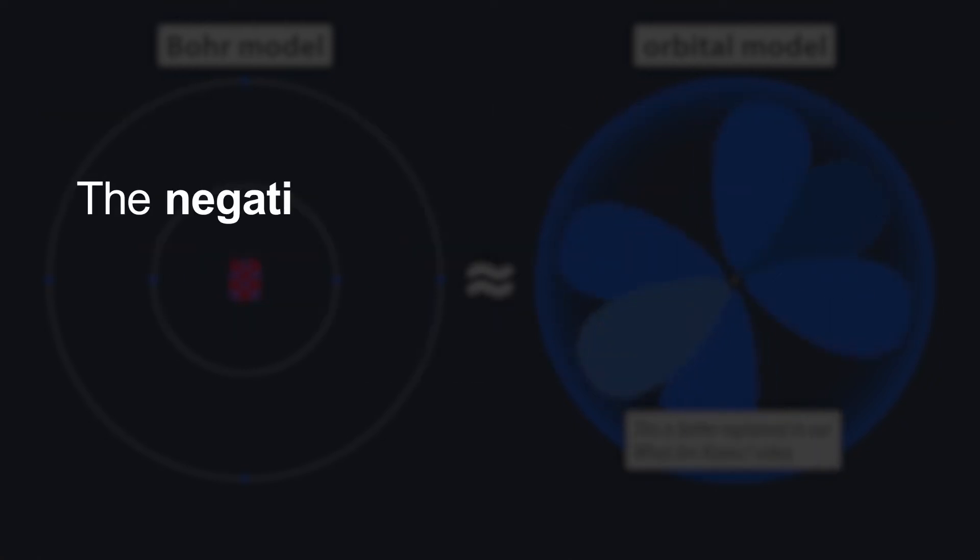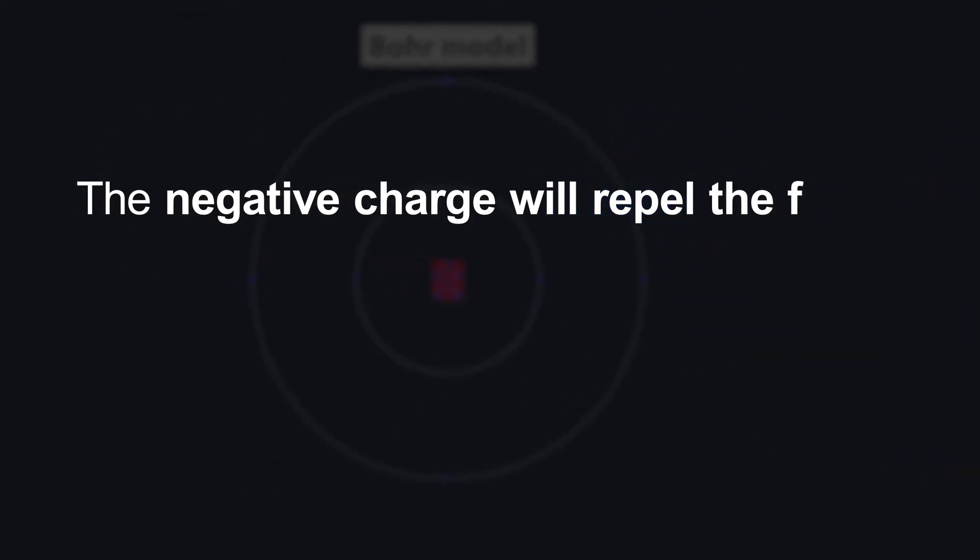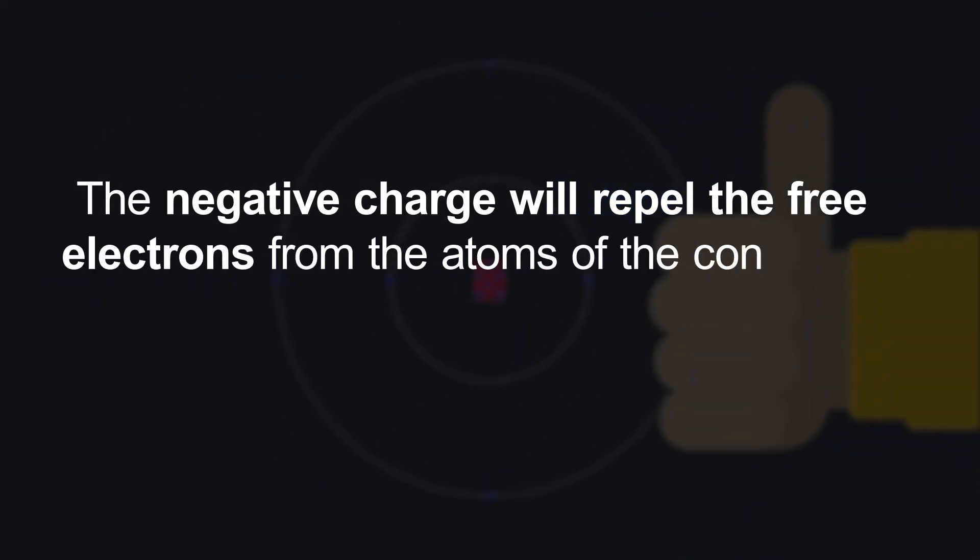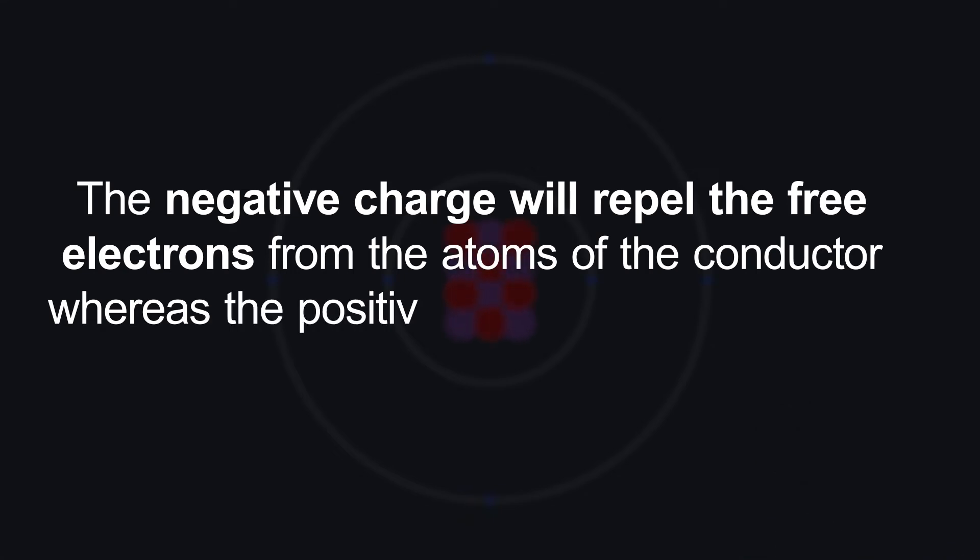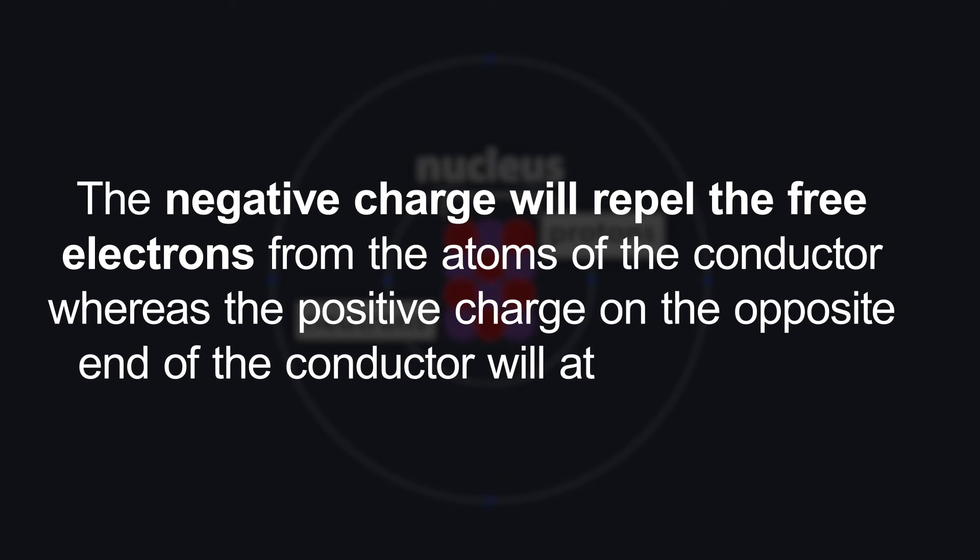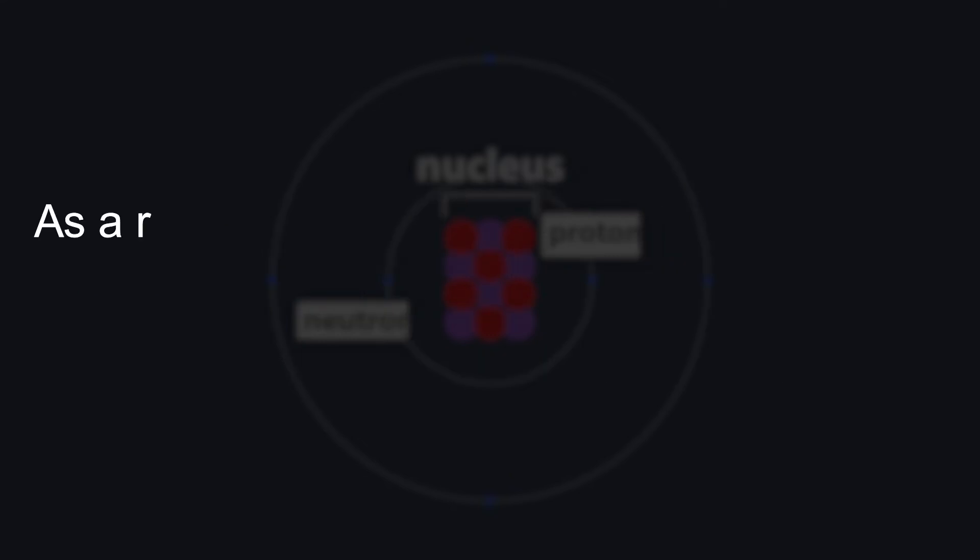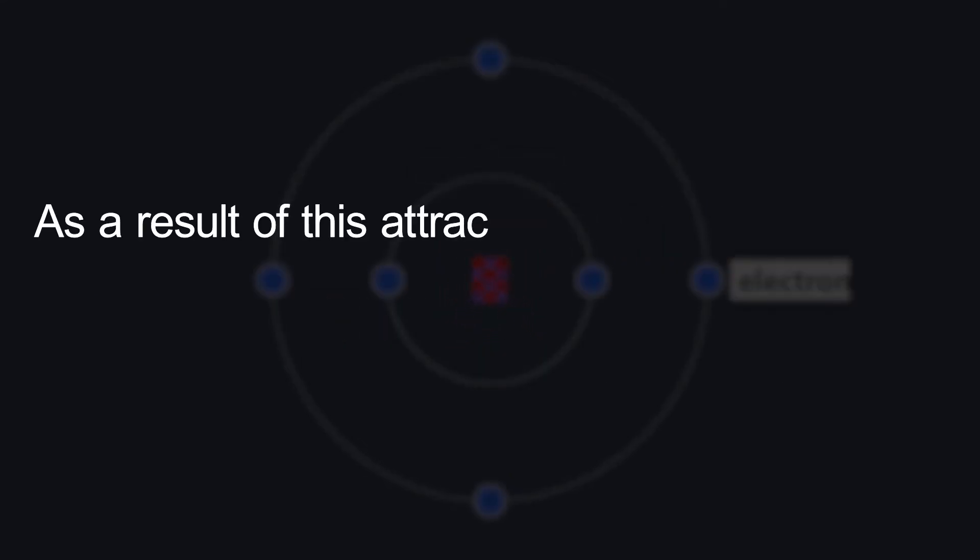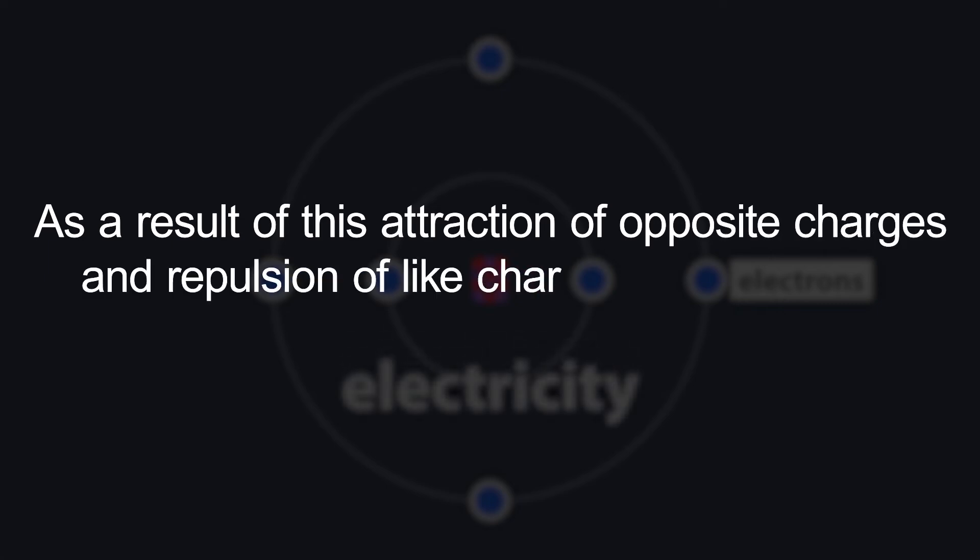The negative charge will repel the free electrons from the atom of the conductor whereas the positive charge on the opposite end of the conductor will attract electrons. As a result of this attraction of opposite charges and repulsion of like charges, electrons will flow through the conductor.